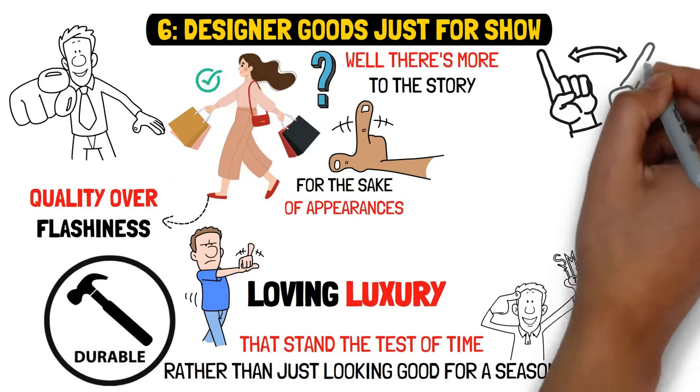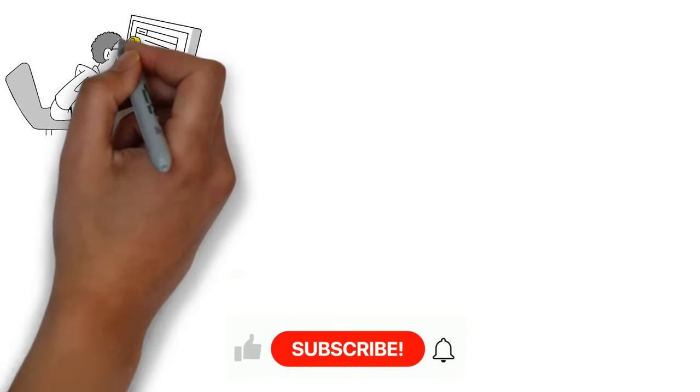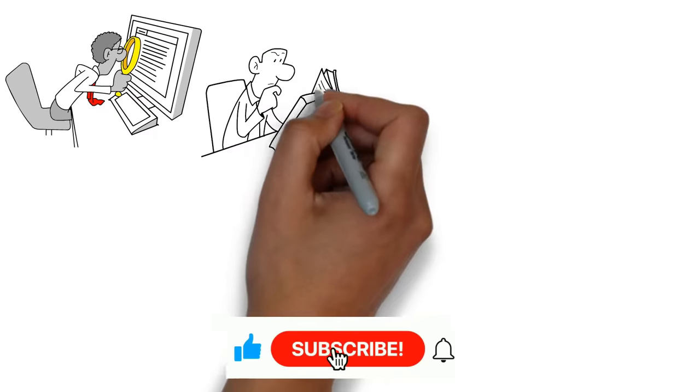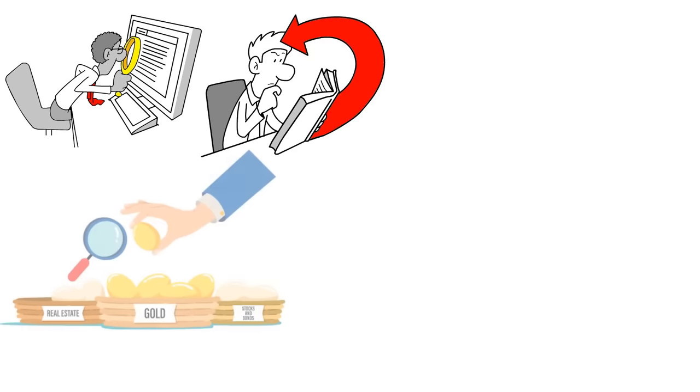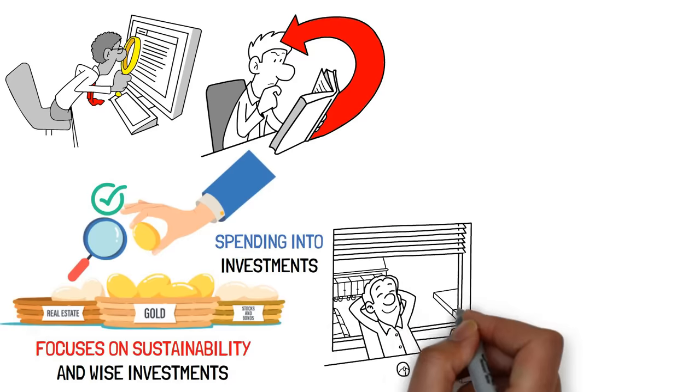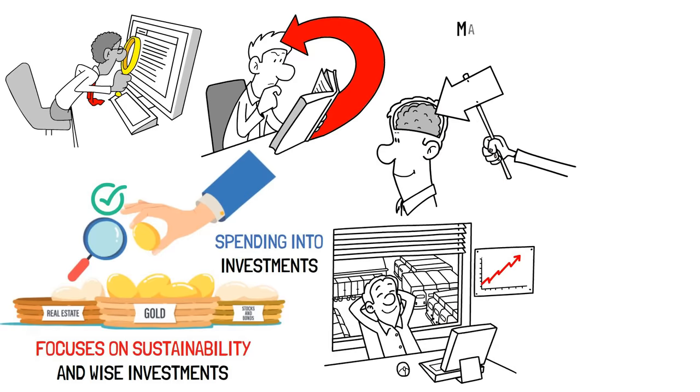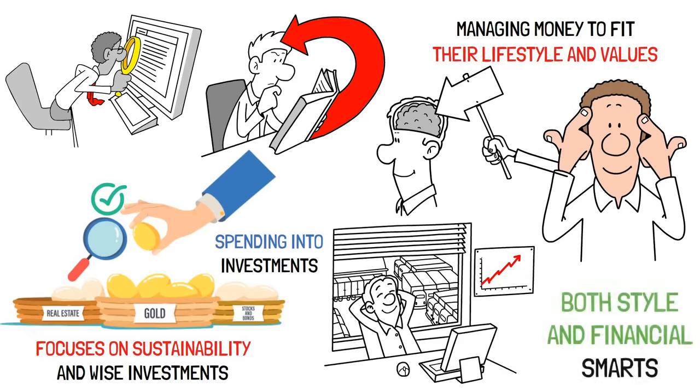They're not dazzled by big brand names. They're hunting for real value and enduring quality. They dive deep into market research to ensure their buys are sound, reflecting a sharp understanding of what holds value. Their buying choices are part of a bigger picture, a calculated approach to managing their wealth that focuses on sustainability and wise investments. By picking items that last, they turn their spending into investments. This savvy approach helps them keep and build their wealth, proving they know a thing or two about managing money to fit their lifestyle and values. It's all about making thoughtful choices that show a keen sense of both style and financial smarts.